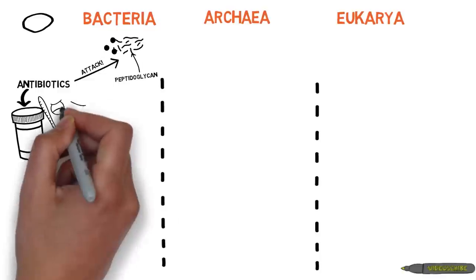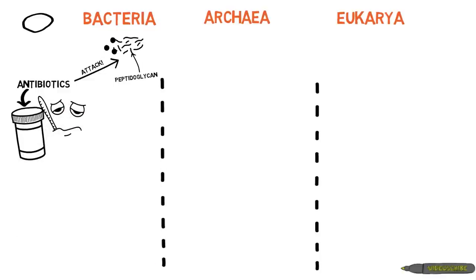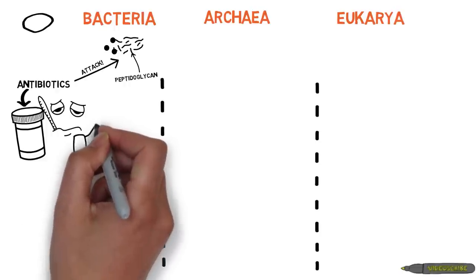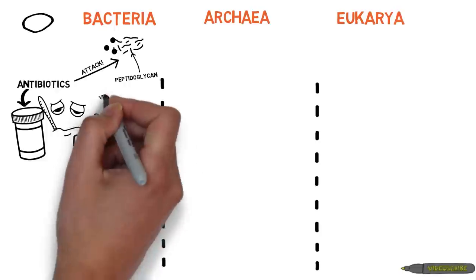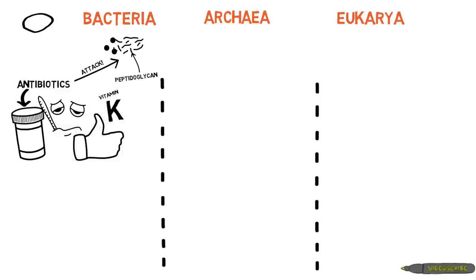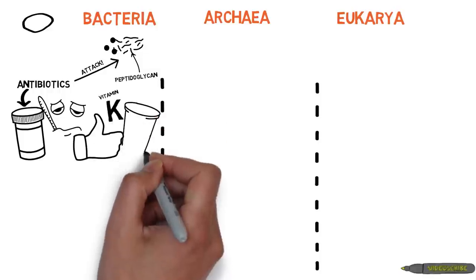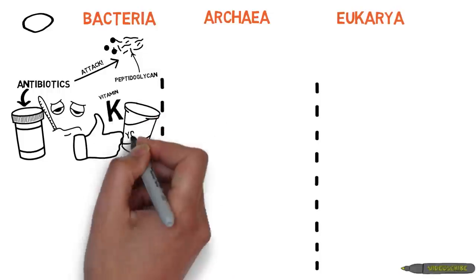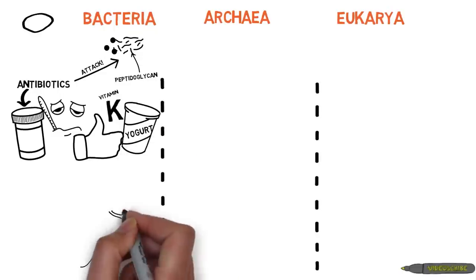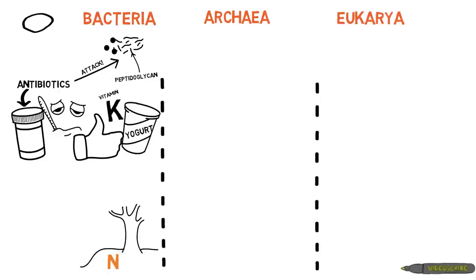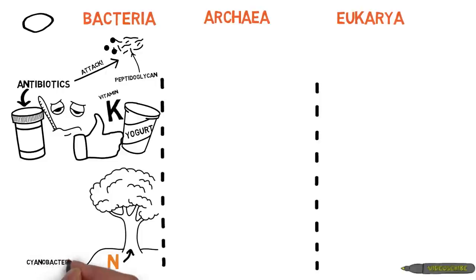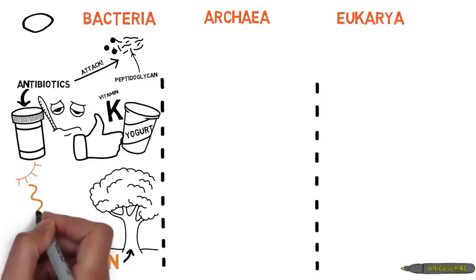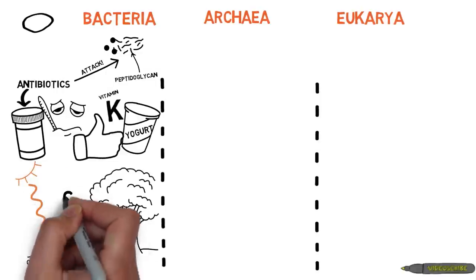When people think of bacteria, they think of germs. While this can sometimes be the case, there are more bacteria in our bodies than human cells, and they help us digest food and provide us with nutrients we wouldn't be able to get otherwise. Bacteria also have many other benefits. Lactobacillus is the bacteria responsible for making your yogurt. Without the bacteria rhizobia, plants couldn't take in the nitrogen they need to survive. Cyanobacteria live in the oceans and produce a large portion of the oxygen in our atmosphere by photosynthesis.